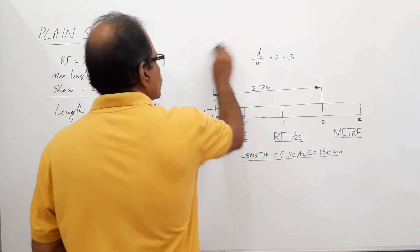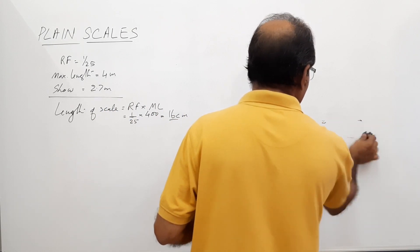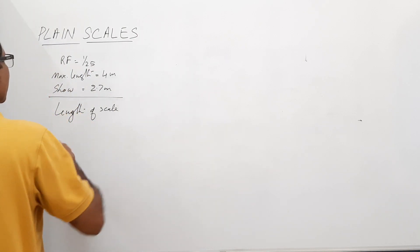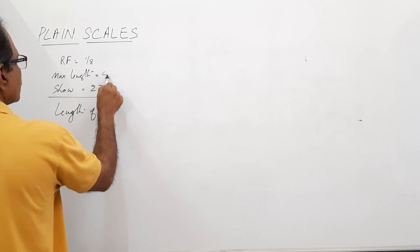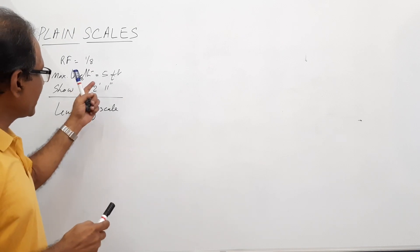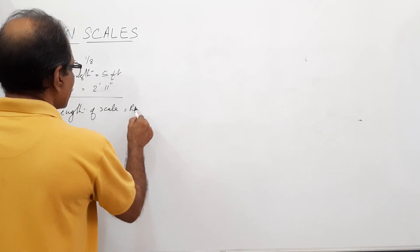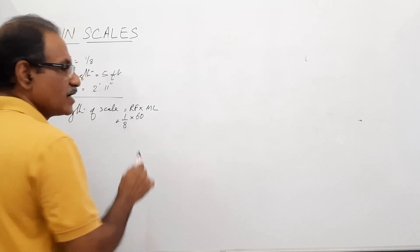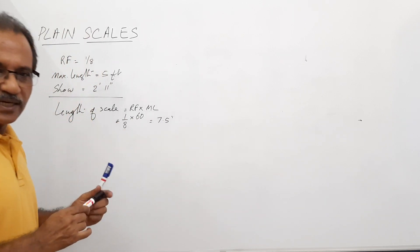Now I have one more problem. The RF is 1 by 8, the maximum length is 5 feet, and you are asked to show 2 feet 11 inches on it. Length of scale equals RF into maximum length: 1 by 8 into 5 feet. 5 feet is 60 inches, so length of scale equals 7.5 inches.